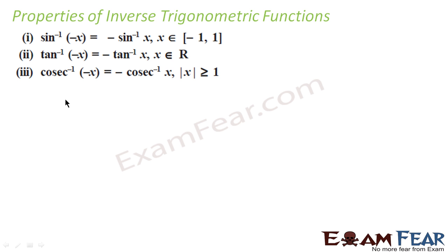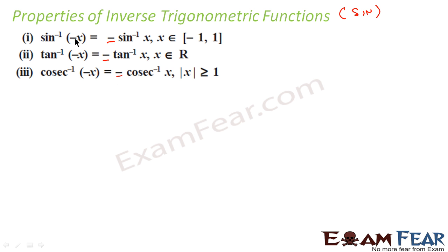Now let's look at the sin group properties. sin⁻¹(−x) = −sin⁻¹(x), tan⁻¹(−x) = −tan⁻¹(x), and cosec⁻¹(−x) = −cosec⁻¹(x). Notice that a minus sign is added everywhere — if there's a minus in the input, you get a minus in the output, and this applies to the entire sin family.